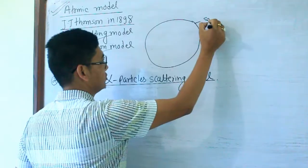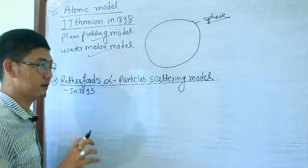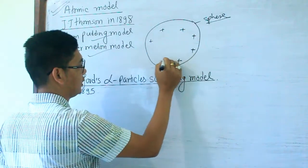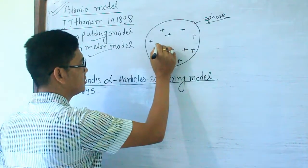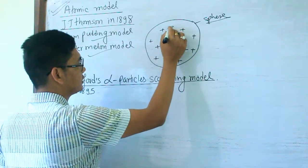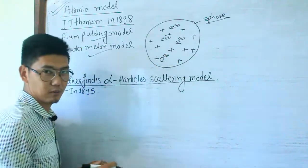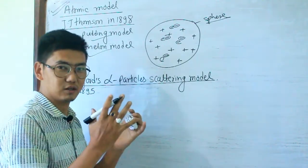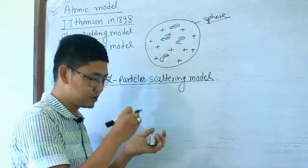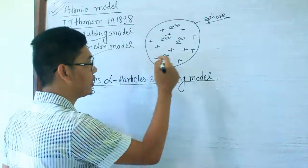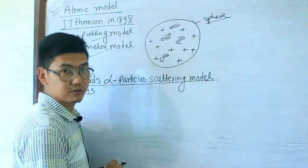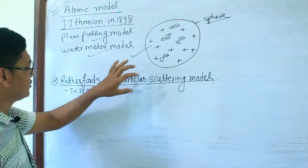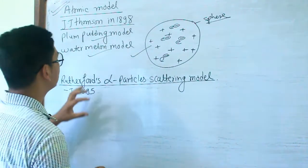An atom is like a sphere. This sphere has a positive charge, and electrons are embedded in the positive charge. This is like a watermelon — imagine a watermelon is cut, and it has a positive charge throughout, with electrons embedded inside. This was prescribed by J.J. Thomson.